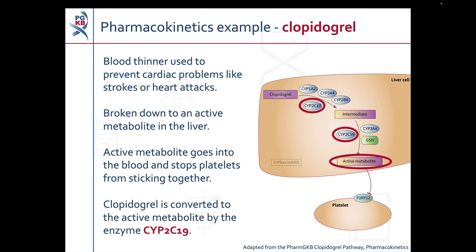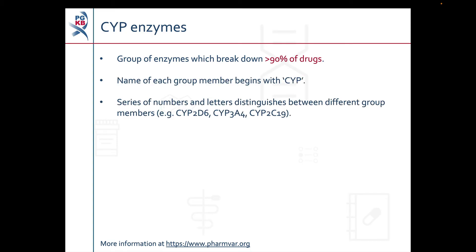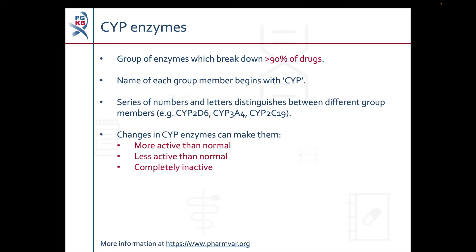An enzyme called CYP2C19 converts clopidogrel to its active metabolite. CYP2C19 belongs to a group of enzymes known as CYP enzymes, which break down over 90% of drugs. The name of each enzyme in this group begins with CYP, followed by a series of letters and numbers which distinguish the different members of the group, like CYP3A4 and CYP2C19. Changes in the genes which encode CYP enzymes can change how active the enzyme is, and as a result how quickly or slowly a drug gets broken down. Some changes may make the enzyme more active than normal, while others may make it less active or even completely inactive.